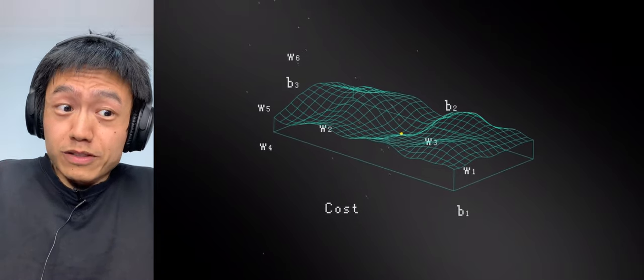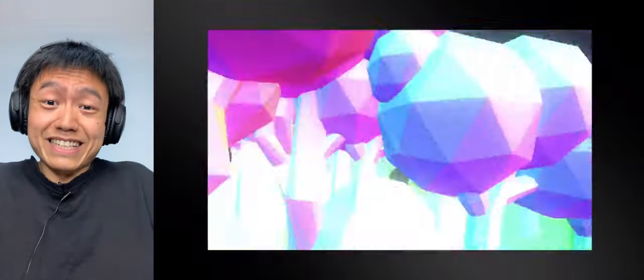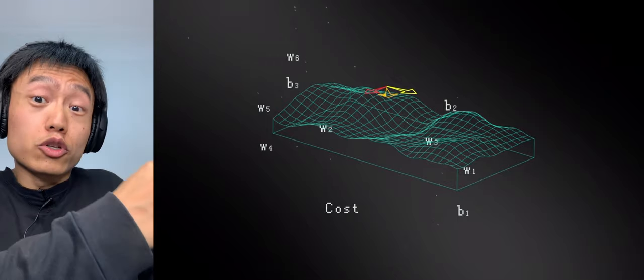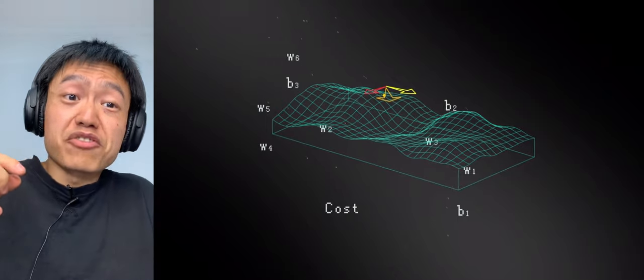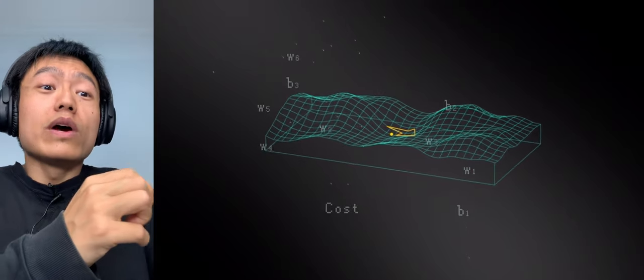Until it reaches the bottom, it can't run around like I did. We need to find an algorithm to point the way to the machine, so that it can find our way down the hill. This algorithm is called gradient descent.